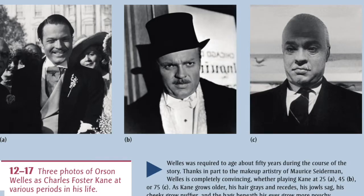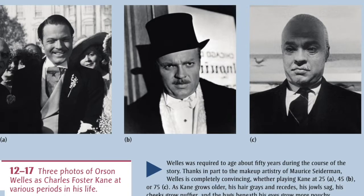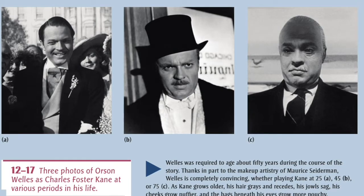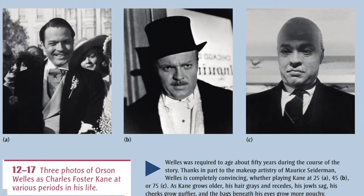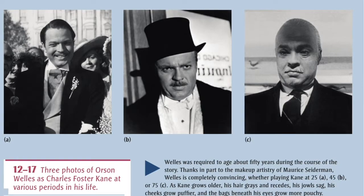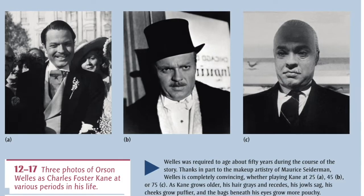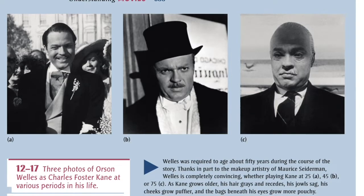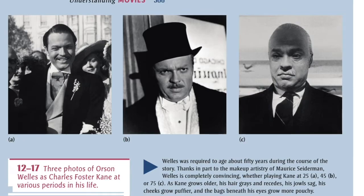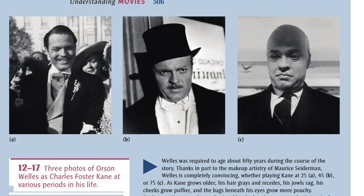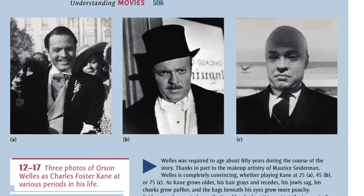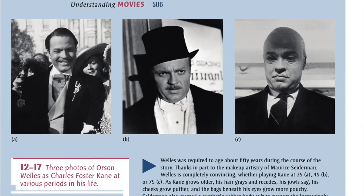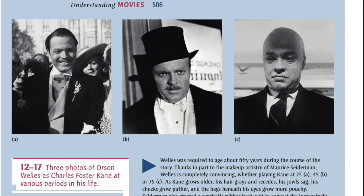12-17: Three photos of Orson Welles as Charles Foster Kane at various periods in his life. Welles was required to age about 50 years during the course of the story, thanks in part to the makeup artistry of Maurice Seiderman. Welles is completely convincing, whether playing Kane at 25 (A), 45 (B), or 75 (C). As Kane grows older, his hair greys and recedes, his jowls sag, his cheeks grow puffier, and the bags beneath his eyes grow more pouchy. Seiderman also created a synthetic rubber body suit to suggest the increasingly flabby torso of an older man.